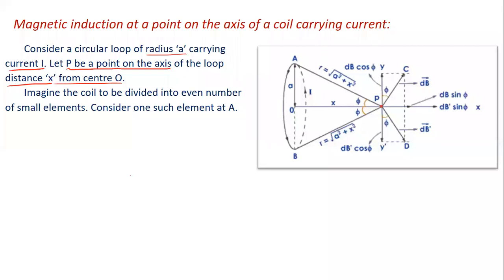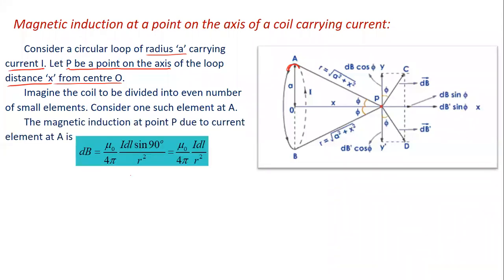We imagine that the coil is divided into a number of small elements. One such element is at point A. Due to this element, the magnetic induction at point P is found using Biot-Savart law: dB = (μ₀/4π) · I·dl·sin90° / r². This gives the magnetic induction due to the length element at point A, and it is called dB.